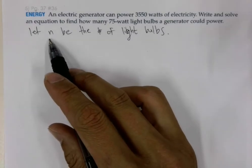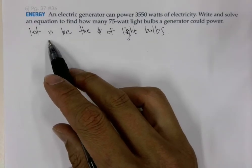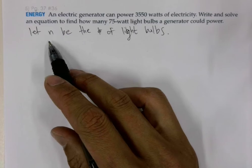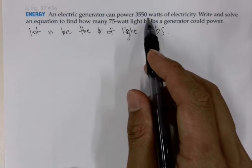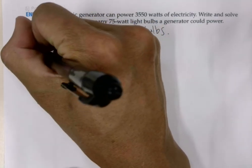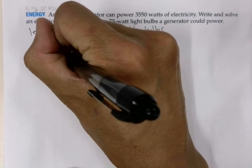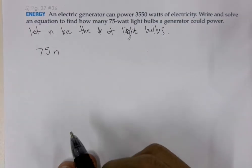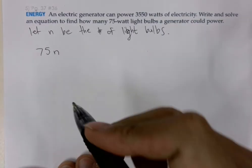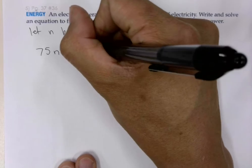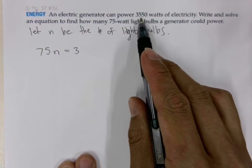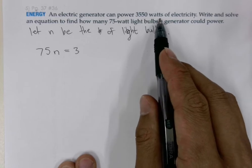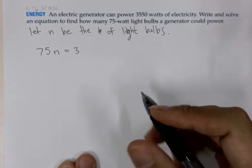So if N is the number of 75-watt light bulbs, we can find out how many light bulbs this generator can power by taking 75 and multiplying that by the number of light bulbs. Now we'll set this expression equal to the maximum power, which is 3550 watts that this electric generator can power.